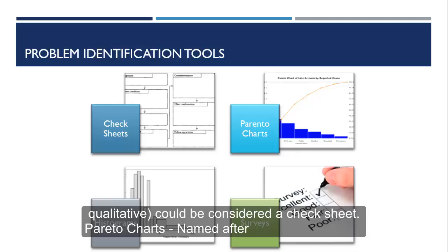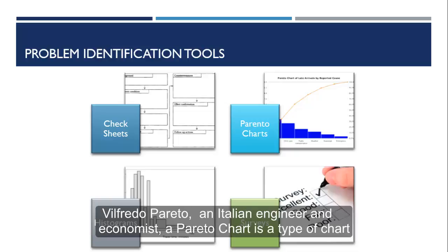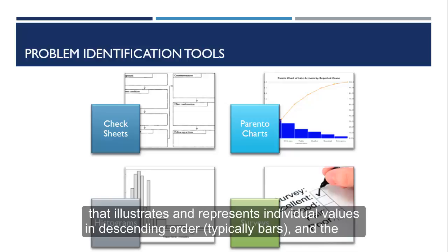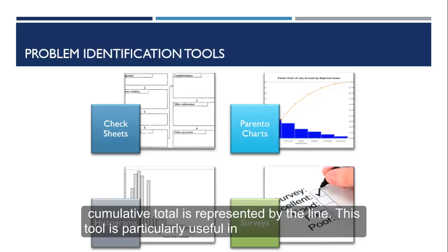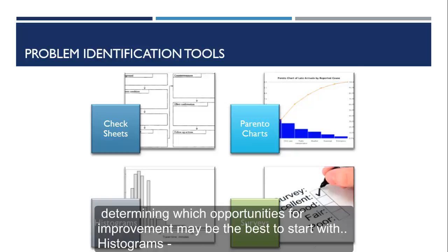Pareto charts. Named after Vilfredo Pareto, an Italian engineer and economist. A Pareto chart is a type of chart that illustrates and represents individual values in descending order, typically bars, and the cumulative total is represented by the line. This tool is particularly useful in determining which opportunities for improvement may be the best to start with.